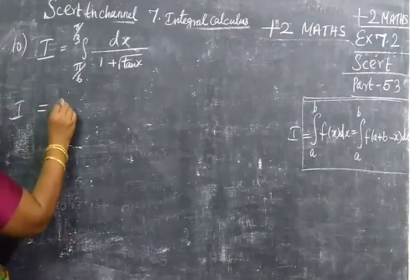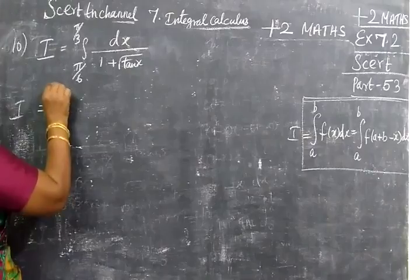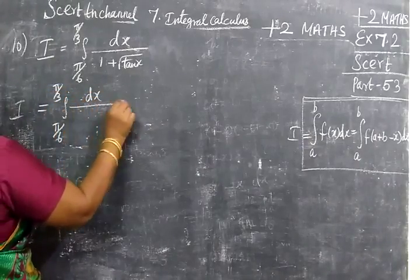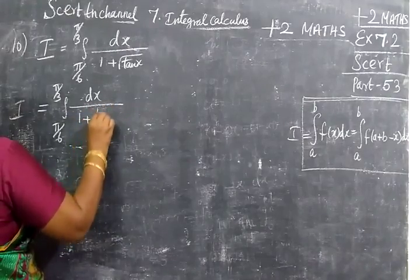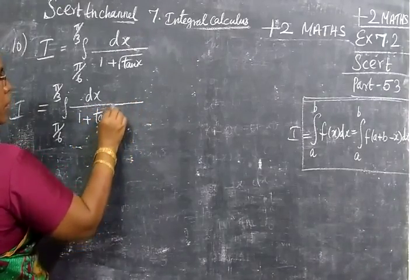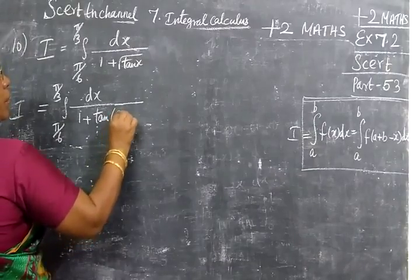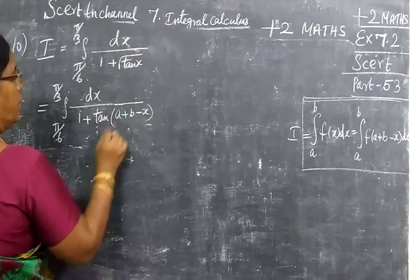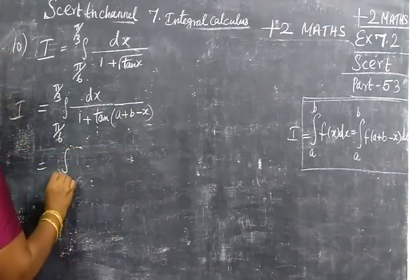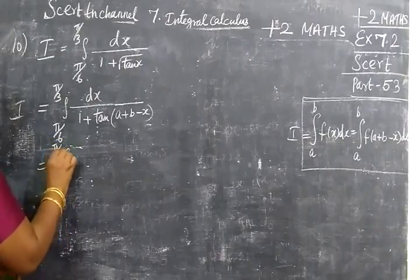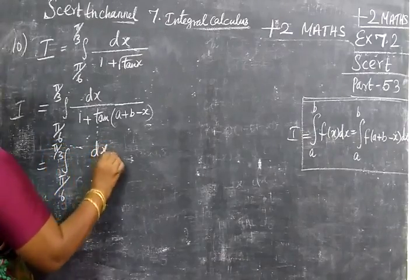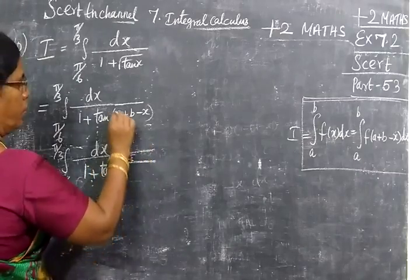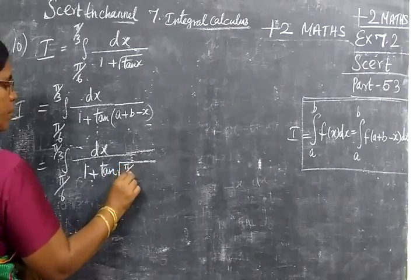So, I equals integral from π/6 to π/3 of dx divided by 1 plus tan of x. Now applying the property, we replace x with a plus b minus x, where the upper limit a is π/3.